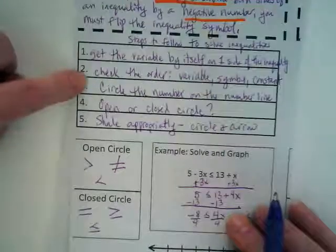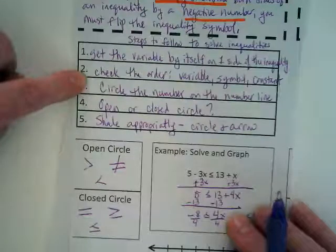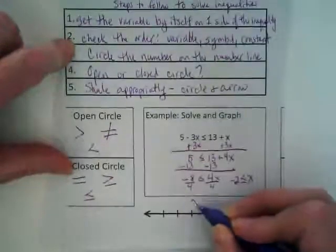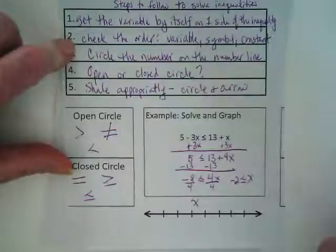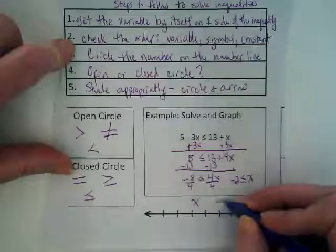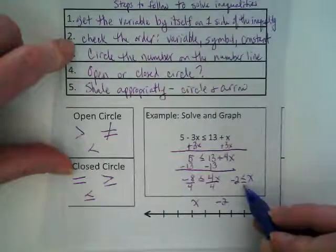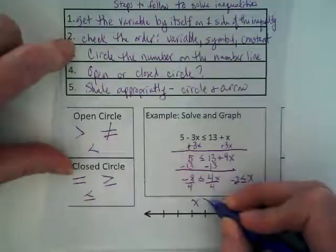Check the order. Is it in the right order? No, so we want to switch it, don't we? So I'm going to rewrite this as x, and I'm going to put it up above the number line because it's the title for my graph. x is greater than or equal to negative 2.